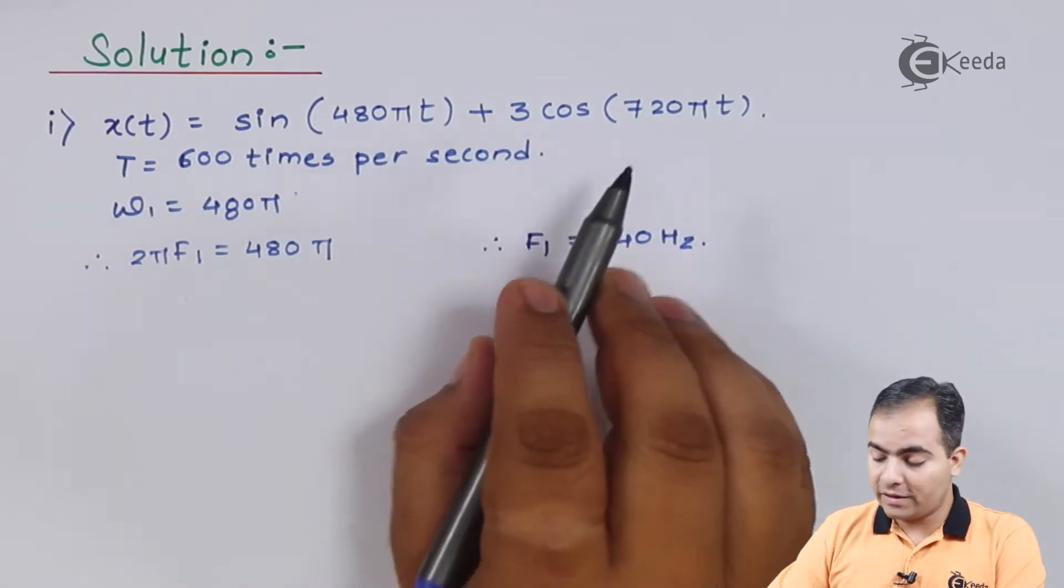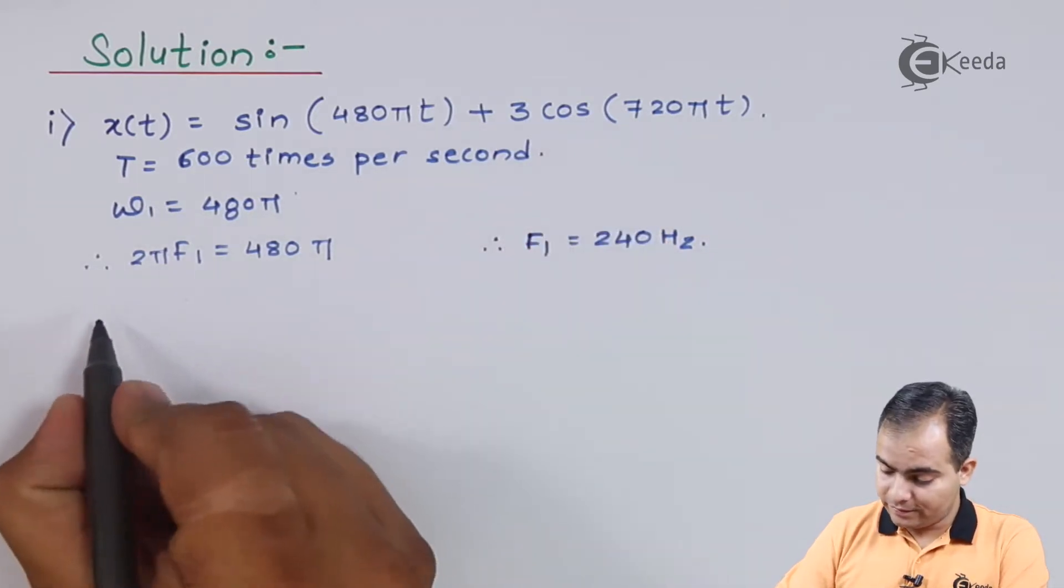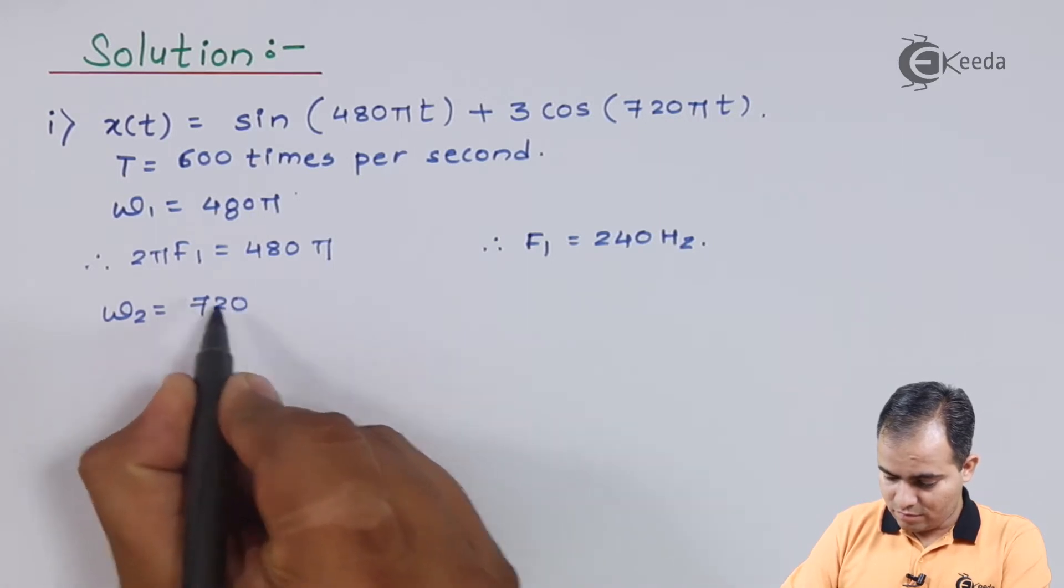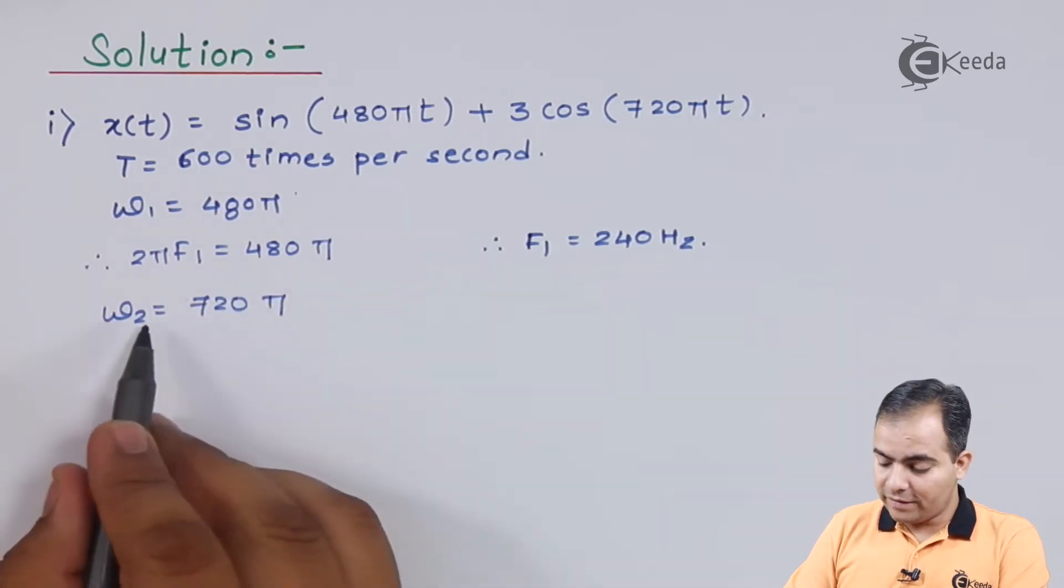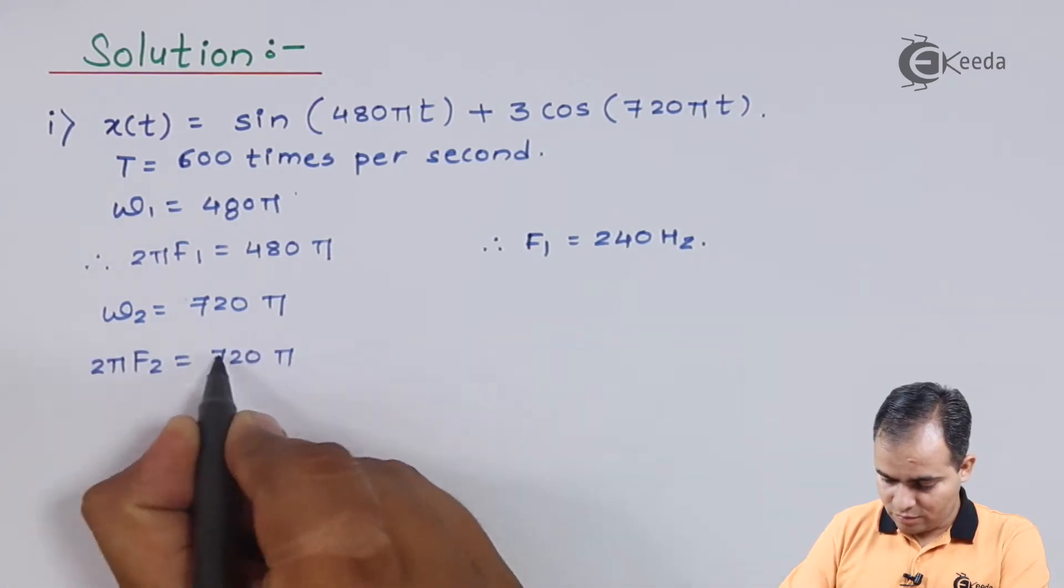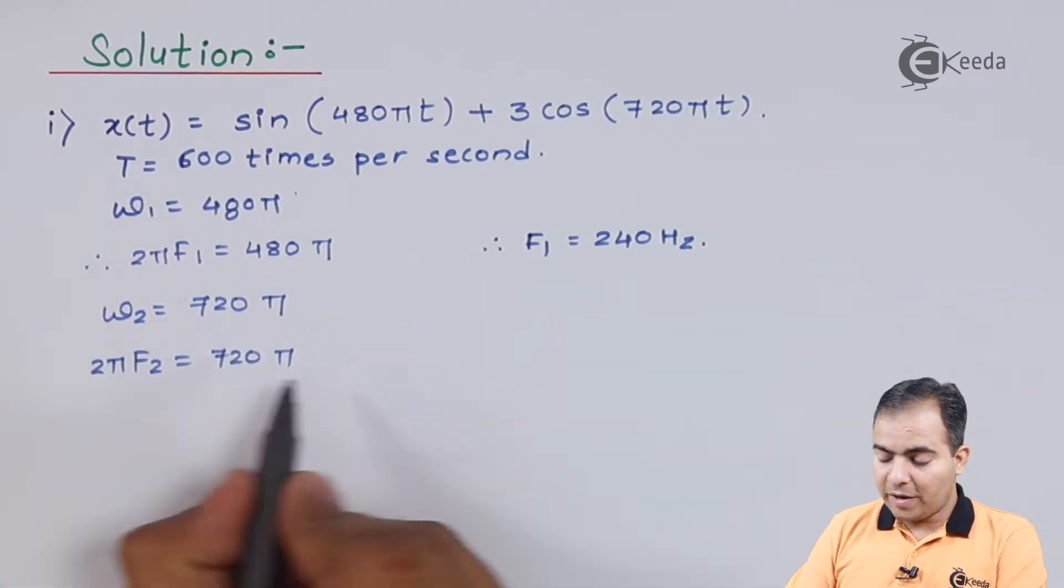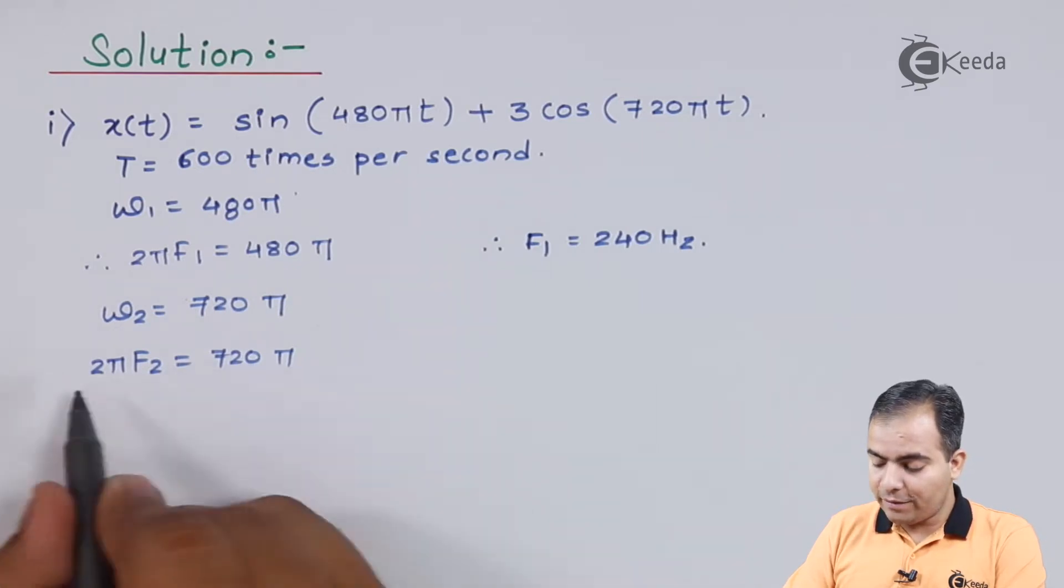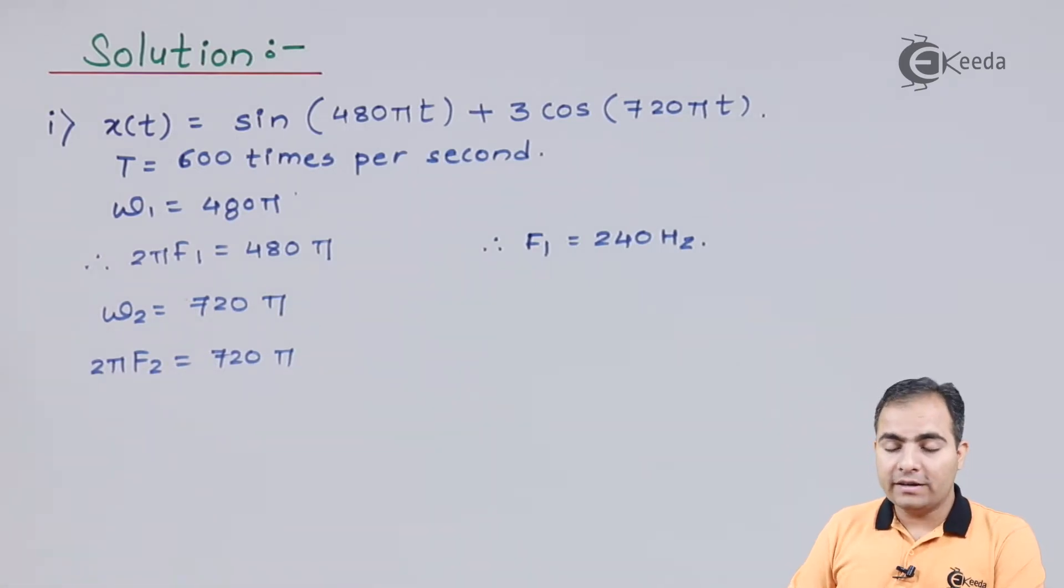Now we will calculate the second part, omega 2. Again we will substitute the omega 2 value. π gets cancelled, and if I divide 720 by 2, answer is 360.